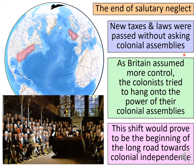New taxes and laws were passed without asking colonial assemblies. As Britain assumed more control, the colonists tried to hold on to the power of their colonial assemblies. This shift proved to be the beginning of the long road toward colonial independence. The colonists would come to say they had an inalienable right — a right no one can take away — to rule their own affairs. Because England was refusing to allow that, they would eventually fight.